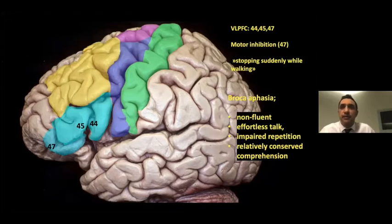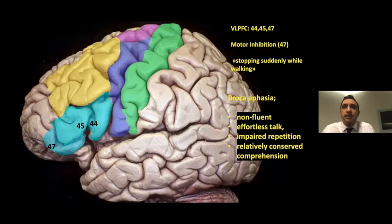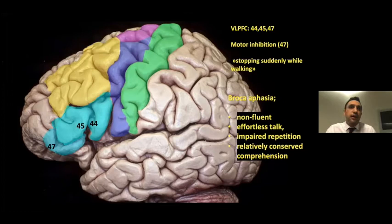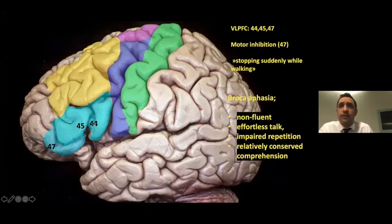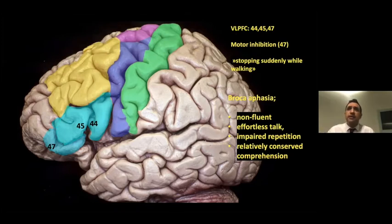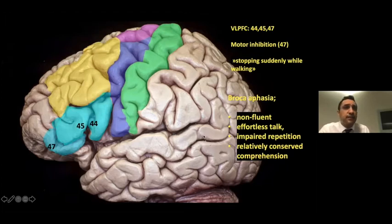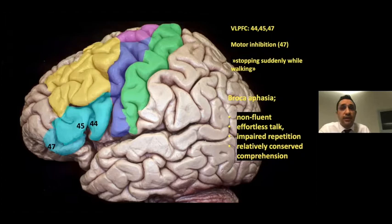In the non-dominant hemisphere, the ventrolateral prefrontal cortex has a critical role — it is active during motor inhibition. For example, when a person stops suddenly while walking, the ventrolateral prefrontal cortex acts to stop motor activity. Another part of the ventrolateral prefrontal cortex is Broca's area, which corresponds to Brodmann areas 44 and 45, located on pars opercularis and pars triangularis in the dominant hemisphere. Damage here can produce Broca's aphasia, characterized by non-fluent speech, impaired repetition, and relatively preserved comprehension.